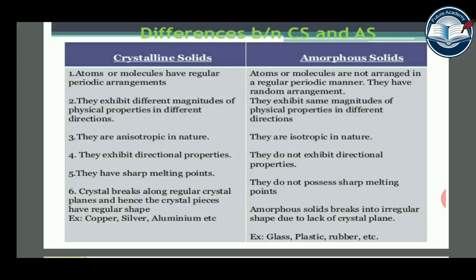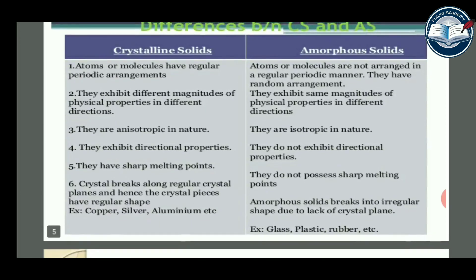Crystalline solids are anisotropic in nature, while amorphous solids are isotropic in nature. Crystalline solids exhibit directional properties, but amorphous solids do not exhibit directional properties. Crystalline solids have sharp melting points, whereas amorphous solids do not possess sharp melting points.